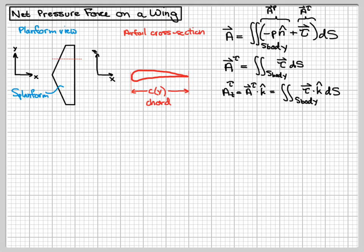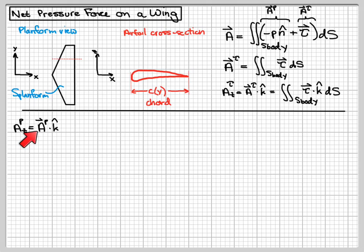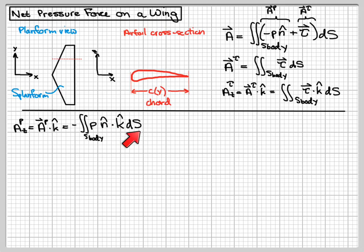A_z_P, the Z component of the pressure force, is found just like with the viscous stress — take the pressure force and dot it with K-hat. So I get minus P N-hat dot K-hat dS, which gives me the Z component of the pressure force. Now I want to interpret what N-hat dot K-hat dS actually means. Looking back at the pictures, we can interpret this as the surface area for that small surface element dS viewed from the positive Z direction.